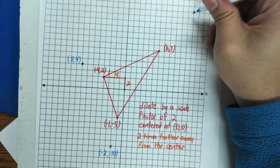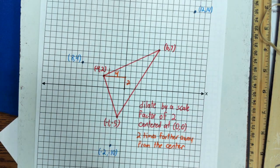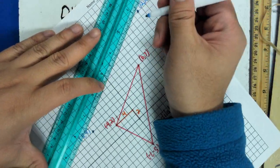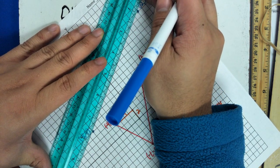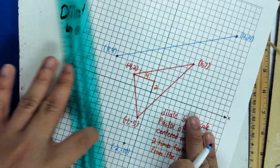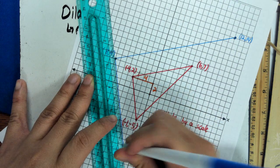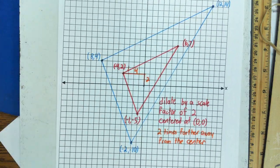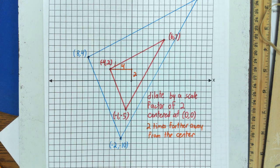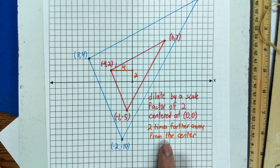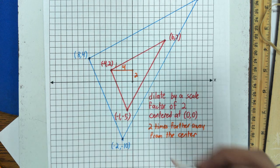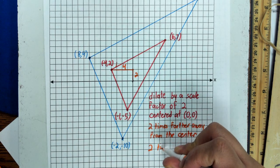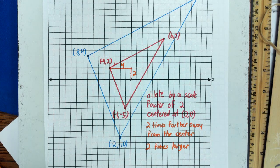Let me go ahead and connect these dots. So in terms of dilation on the graph, a scale factor of two means two times farther away from the center. It also means your new triangle is two times larger than the original. So the scale factor means two things: it's twice the distance from the center, and it's twice the size of the original pre-image.